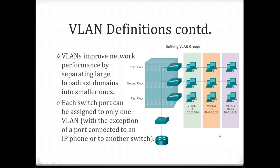Typically separate VLANs will be separate subnets, and that's the case here. The IT VLAN is on the 10.0.2 network, the HR VLAN is on the 10.0.3 network, and the Sales VLAN is on the 10.0.4 network. In networking, we cannot communicate with another network unless we are able to route traffic from one network to the next. That is why our unicast, broadcast, and multicast messages only stay within our VLANs.